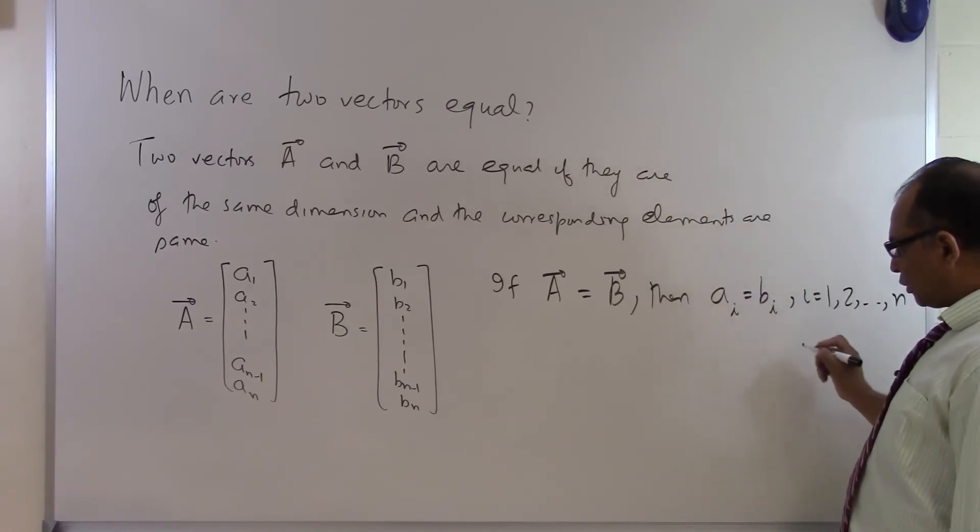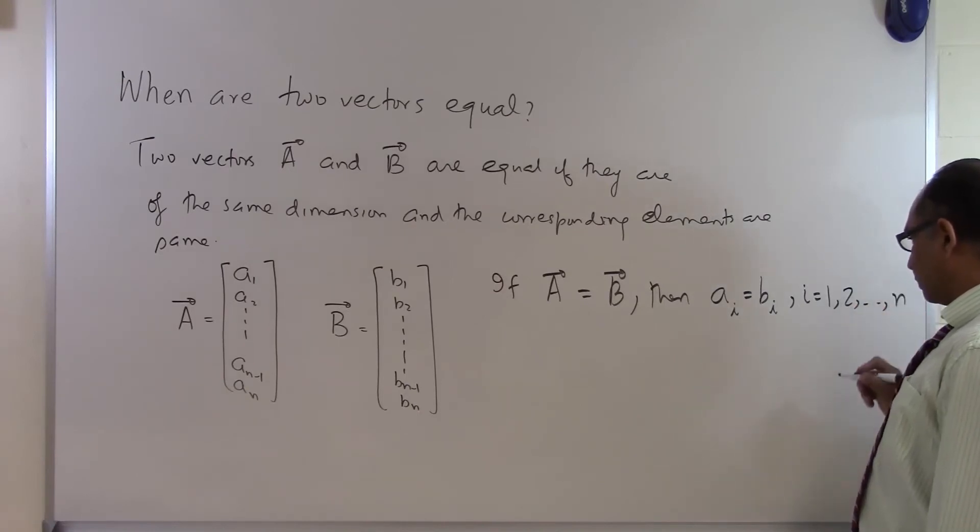So that means that A1 has to be equal to B1, A2 has to be equal to B2, A3 has to be equal to B3 for all the values of i which is going from 1 to n.